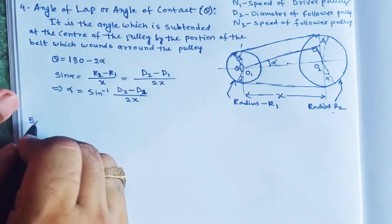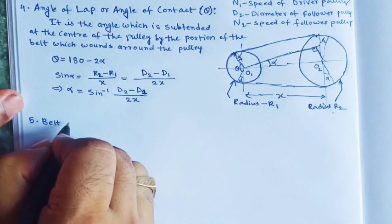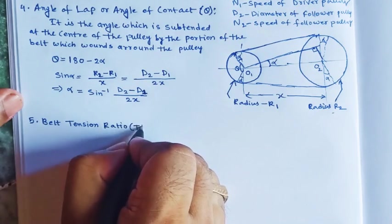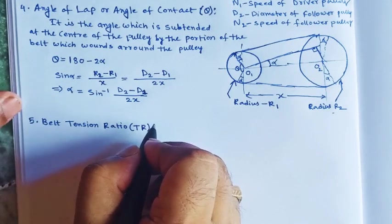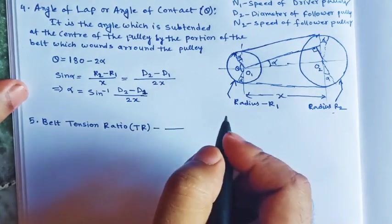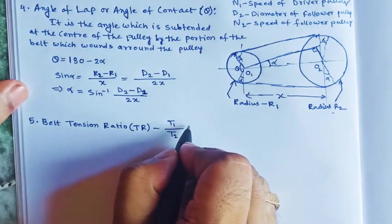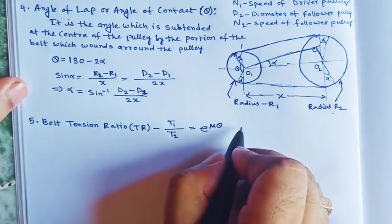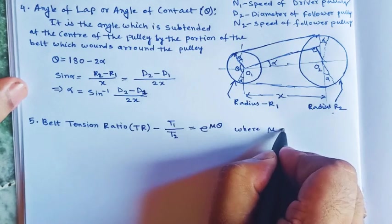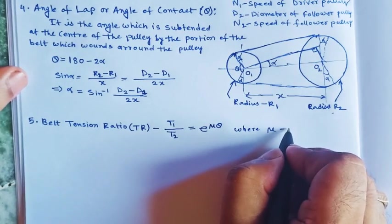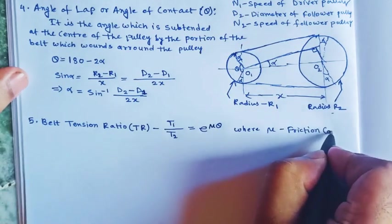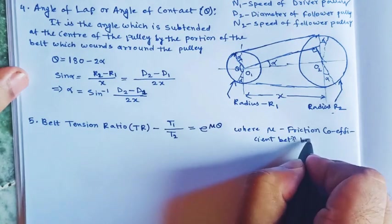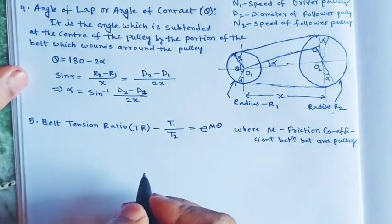Fifth is the belt tension ratio, denoted by TR. The belt tension ratio is T1 by T2, which equals e to the power of mu times theta. Here, mu is the coefficient of friction between the belt and the pulley.